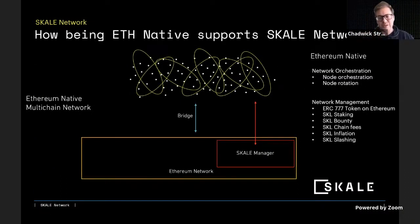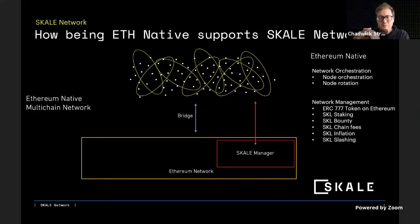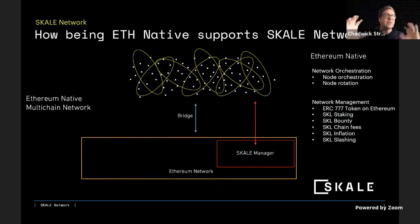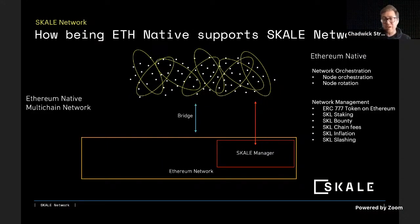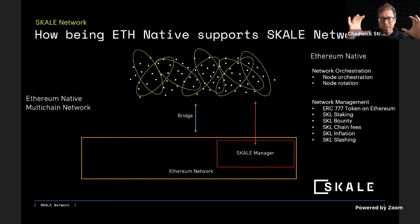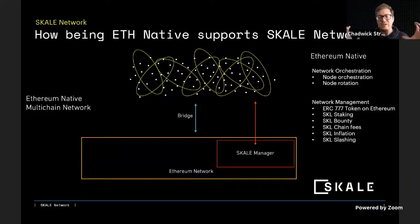How does ETH native support the SCALE network? The SCALE network is many nodes, many chains, with each chain specified to run a particular dApp. Other layer ones have entirely separate node registration, architecture, and validator systems — none of those transactions exist on Ethereum. SCALE is different: all validator registration, node registration, and staking transactions go through SCALE manager on Ethereum. Node orchestration, node rotation, the ERC-777 token, staking, bounties, chain fees, inflation, and slashing all exist on Ethereum.